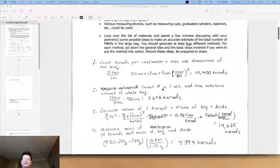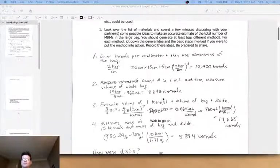I counted in the milliliter and then volume of the whole bag. So 19 kernels in five milliliters times 960 total milliliters gives me 3,648, quite a bit smaller.